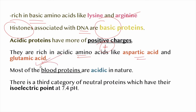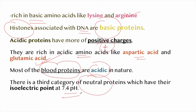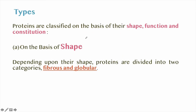There is a third category of neutral proteins which have their isoelectric point at pH 7.4. Proteins can be classified on the basis of shape, function, and constitution. On the basis of shape, proteins are divided into two types: fibrous and globular.